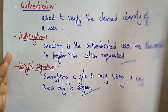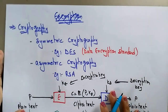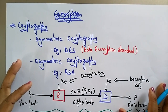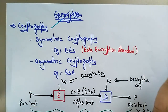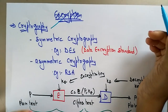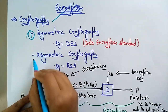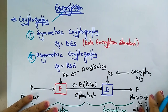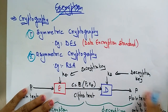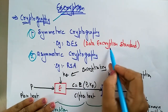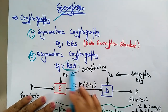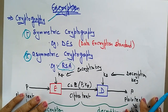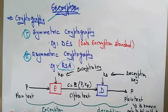Let me explain some of these mechanisms in more detail. Cryptography is essentially encryption and decryption combined. Cryptography is of two types: symmetric and asymmetric. An example of symmetric cryptography is the Data Encryption Standard (DES), and an example of asymmetric cryptography is RSA, named after its three authors.